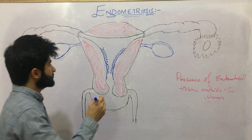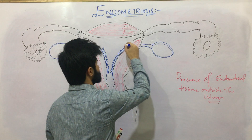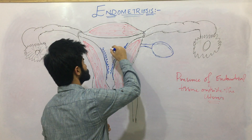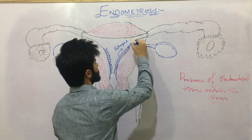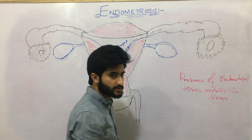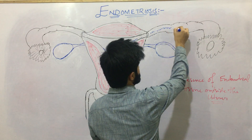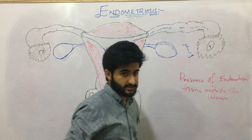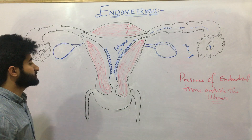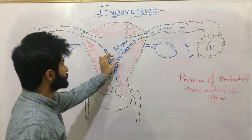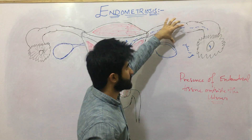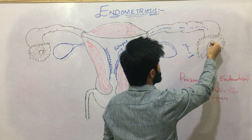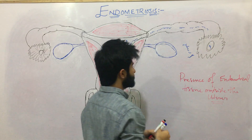So how does this endometrium spread into different parts of the body? There are many theories. One theory is that the endometrial tissue undergoes retrograde movement — it moves backward through the fallopian tubes and deposits into the peritoneal cavity. This is known as the retrograde theory.